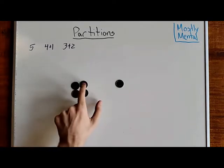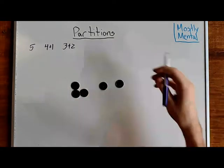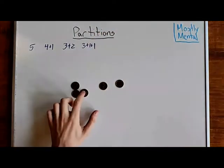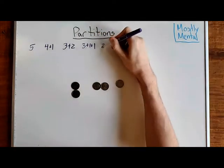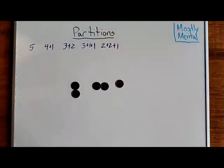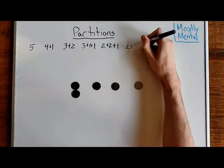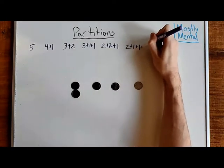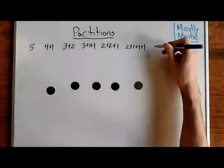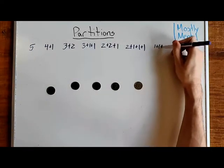And we can also split them into three piles as three, one, one. Or two, two, one. Or we can split them into four piles as two, one, one, one. Or we could just put each coin into its own separate pile.